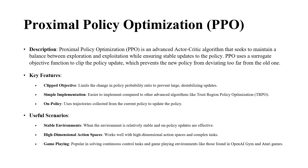For the first one, we have Proximal Policy Optimization (PPO). It's an advanced Actor-Critic algorithm that seeks to maintain a balance between exploration and exploitation, while ensuring stable updates to the policy. PPO uses a surrogate objective function to clip the policy update, which prevents the new policy from deviating too far from the old one.